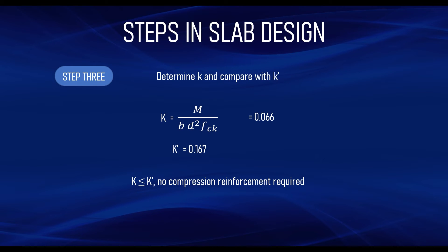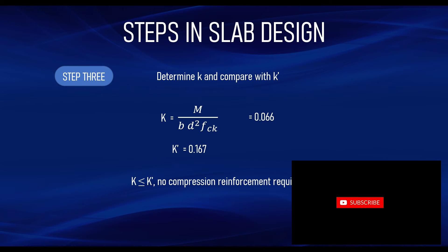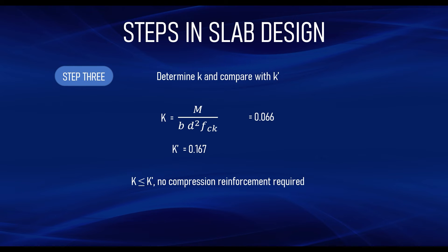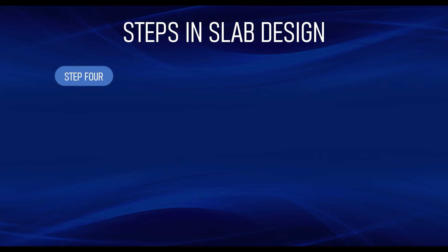When moment acts on a slab it subjects the slab to tension at the bottom. Compression reinforcement is not needed in this case. However, if your calculation gives K greater than K', it is always better not to provide compression reinforcement in a slab because it is more expensive. The most appropriate approach is to go back and increase the effective depth — for example, change the slab thickness from 150 mm to 175 mm.